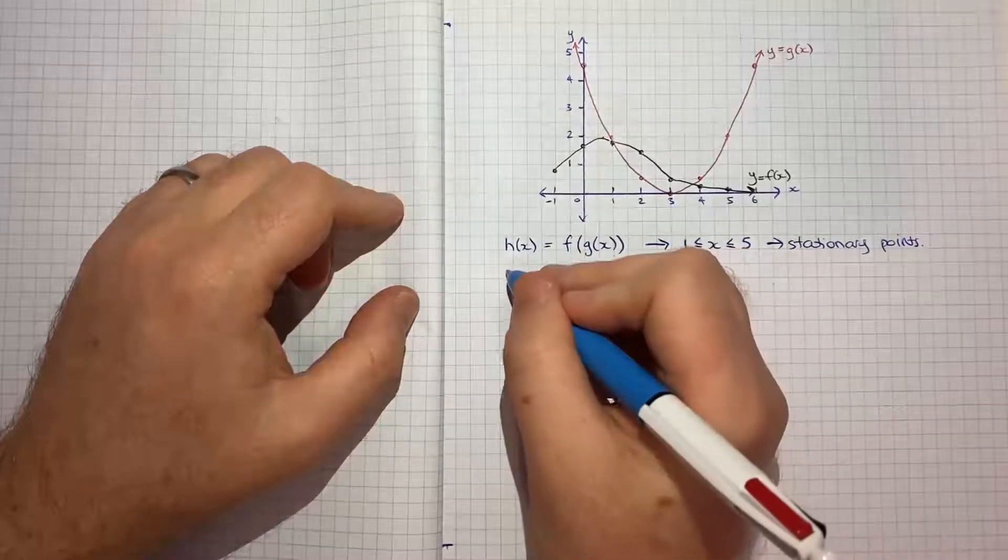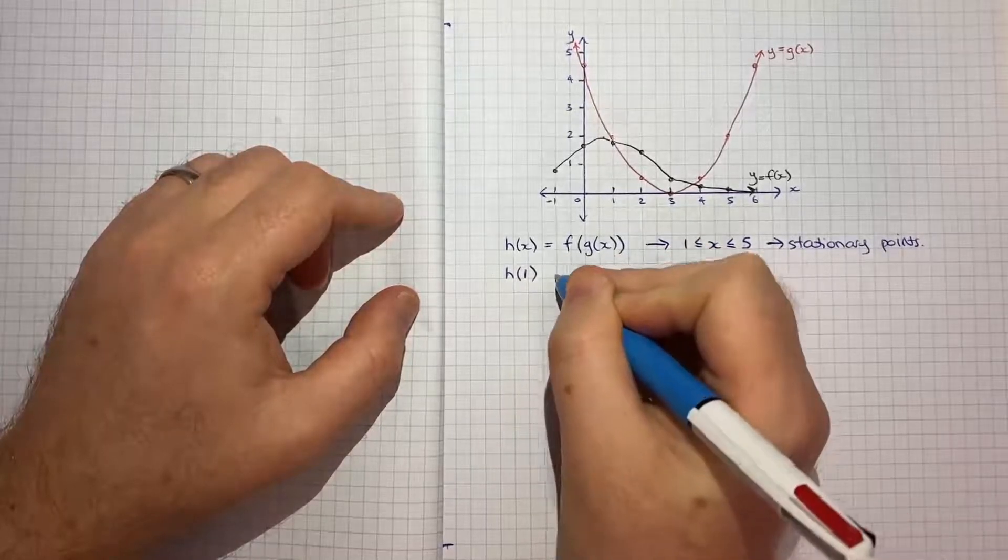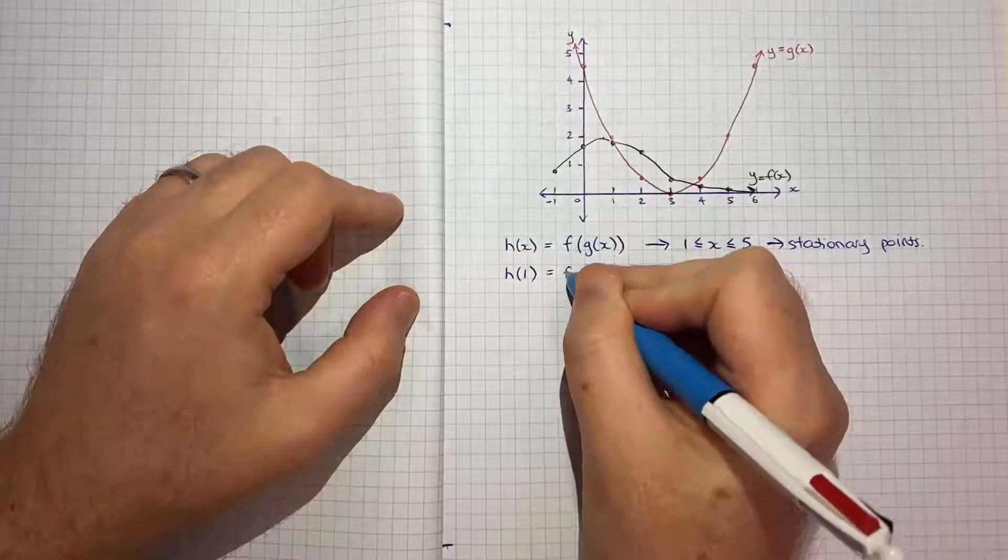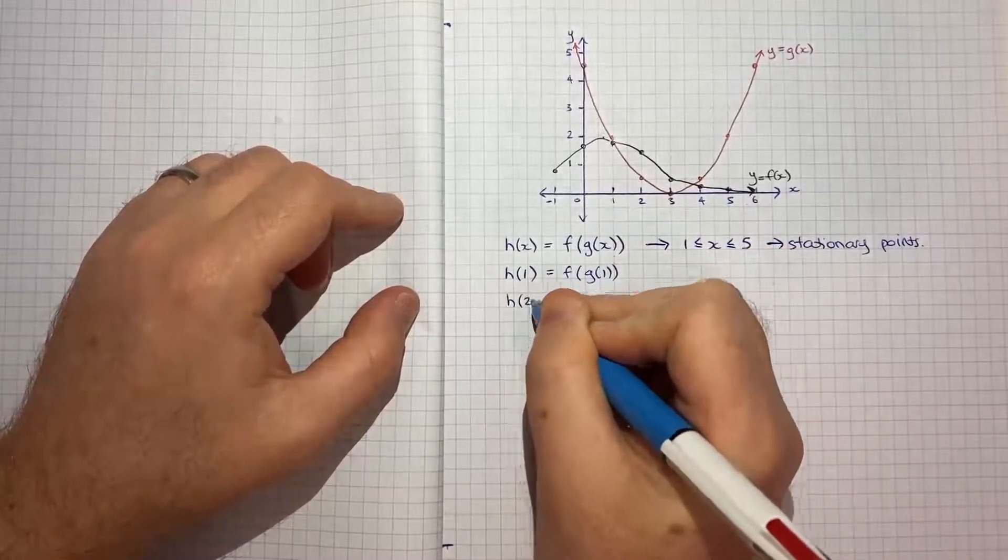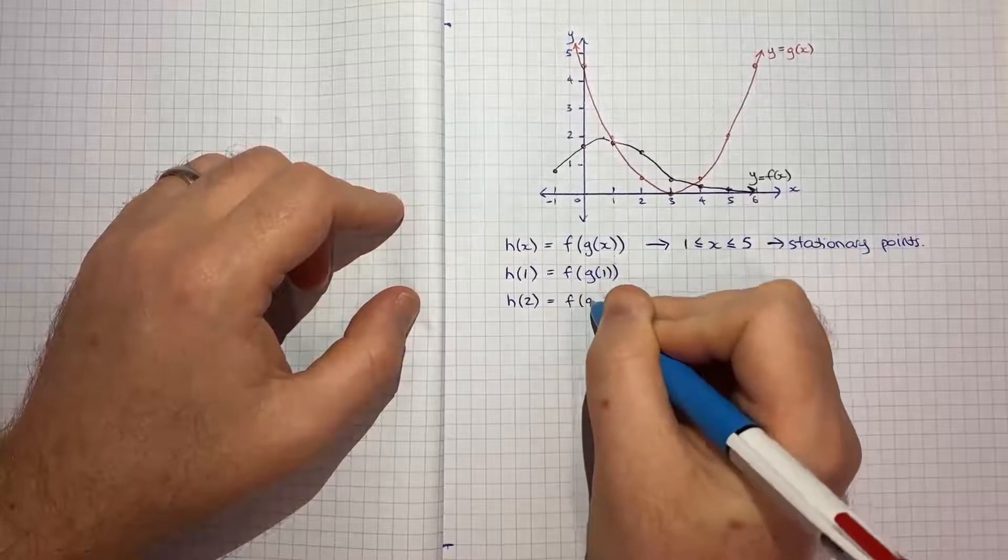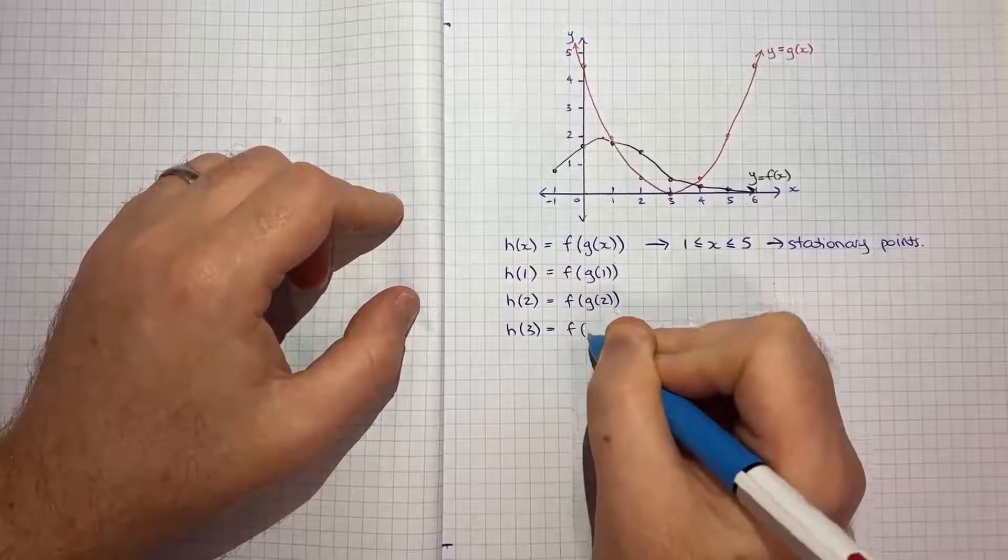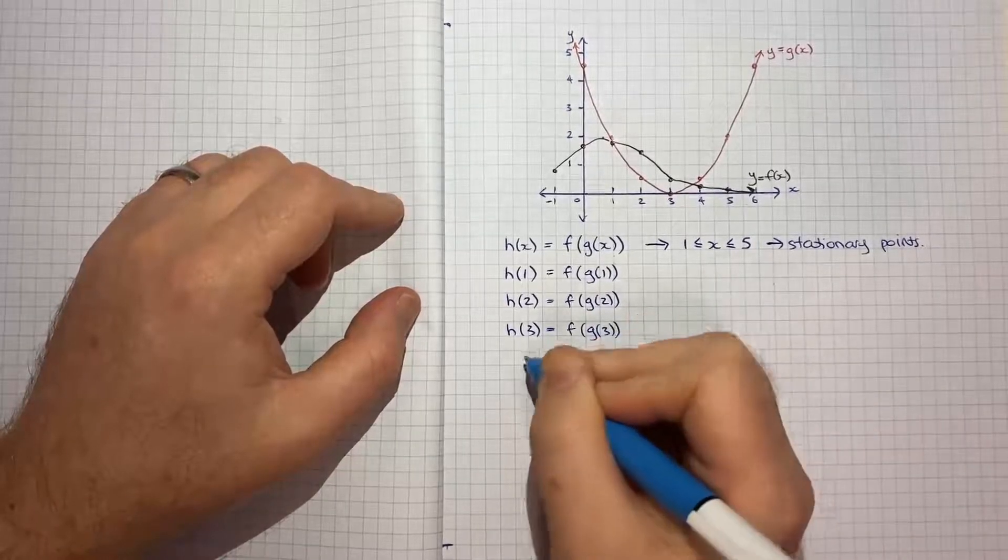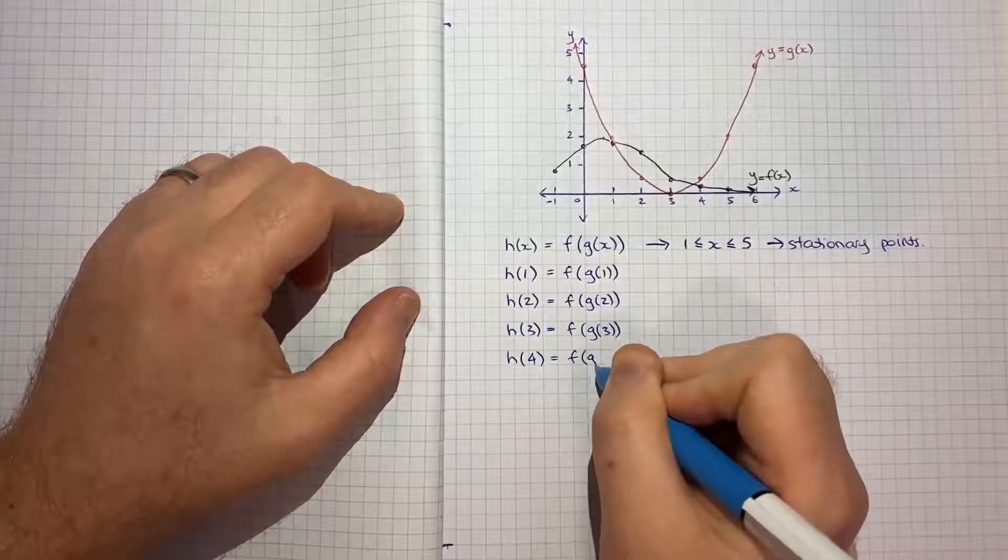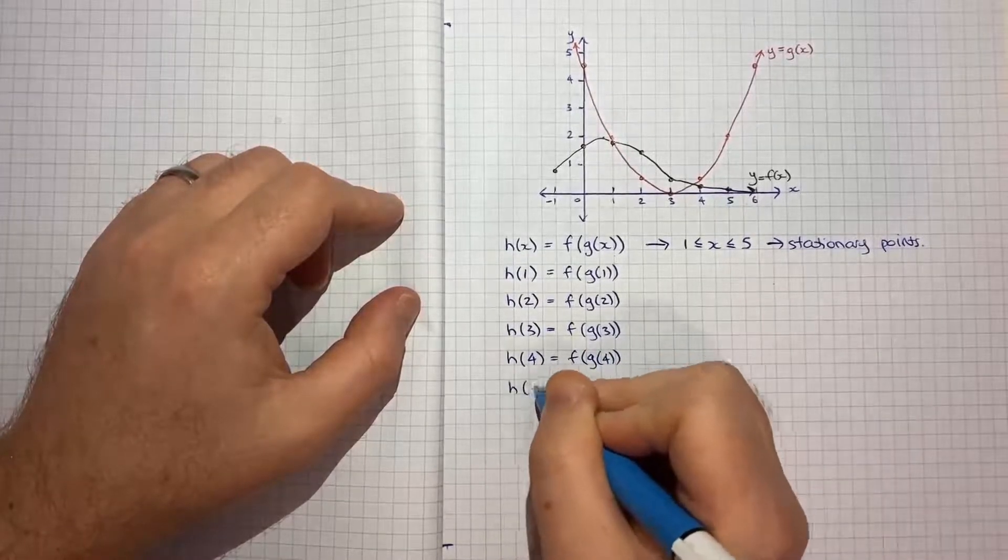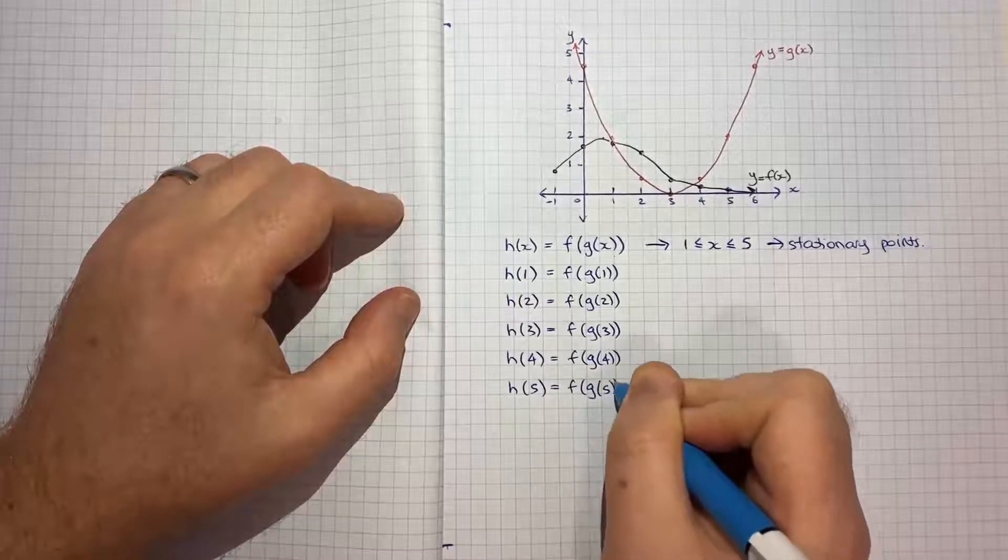So really what we're going to do is we're going to evaluate h when x is 1 and that's really going to be f of g of 1, h when x is 2 which is f of g of 2, h 3 which is f g 3, h 4 which is f g 4 and then h 5 which is f g 5.